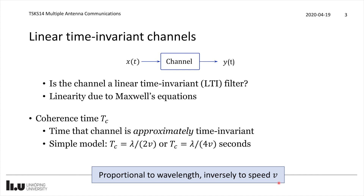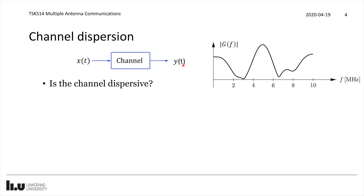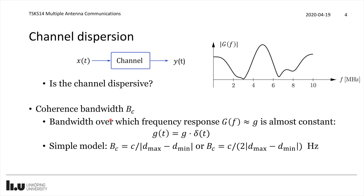If we are operating within the coherence time we can analyze the channel as a time invariant system. However there is another important property: whether the channel is time dispersive. In wireless communication we typically have multiple propagation paths with different time delays, spreading the signal over time. Looking at the frequency response magnitude, a channel with five multipaths shows substantial variation with frequency, but zooming into a sufficiently small frequency interval the response is approximately constant — this is the coherence bandwidth.